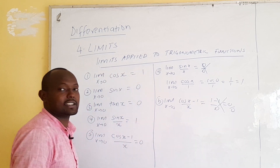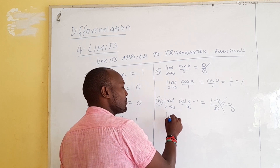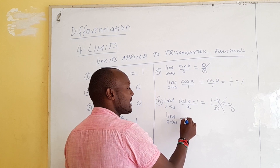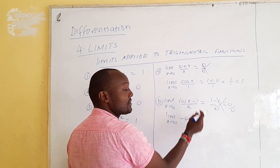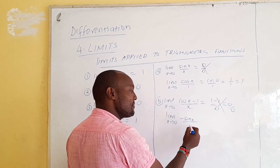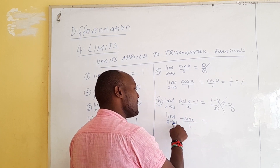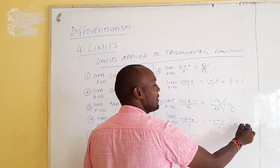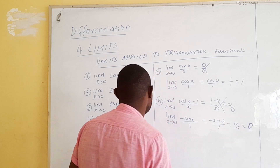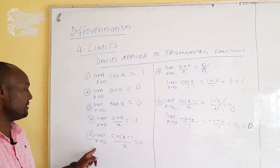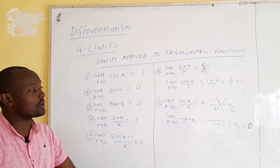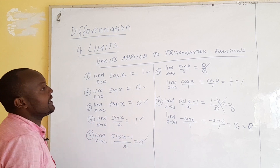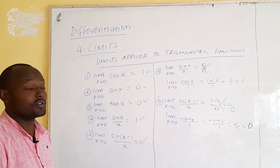By direct substitution (cos x − 1)/x gives 0/0, so we apply L'Hôpital's rule. Differentiating the numerator gives −sin(x), and the constant −1 differentiates to 0, while the denominator differentiates to 1. Substituting x = 0 gives −sin(0)/1 = 0/1 = 0. These five results are key whenever we solve limits involving trigonometry.